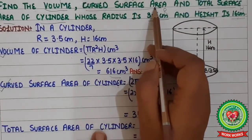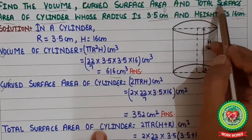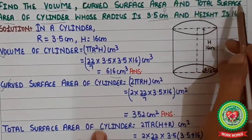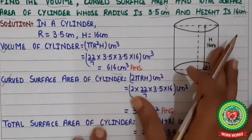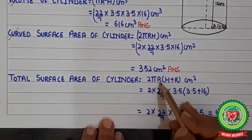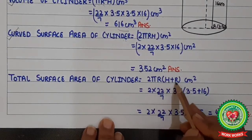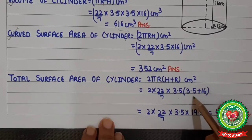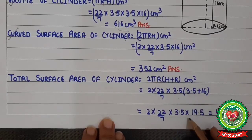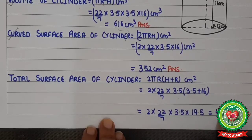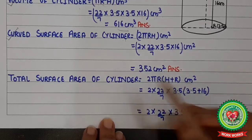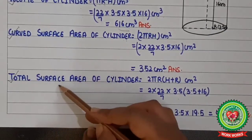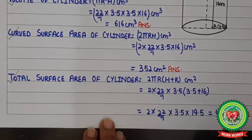The third thing we need to find is the total surface area of the cylinder. Its formula is 2πr(h + r) in cm². Substituting the values, we first solve the bracket: h + r = 16 + 3.5 = 19.5. After doing the cutting and multiplication, we get 429 cm² as the total surface area of the cylinder.